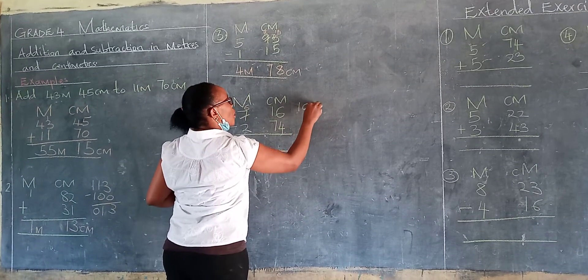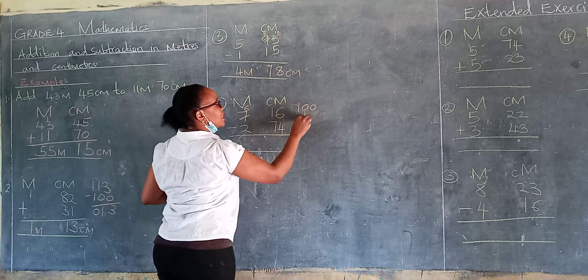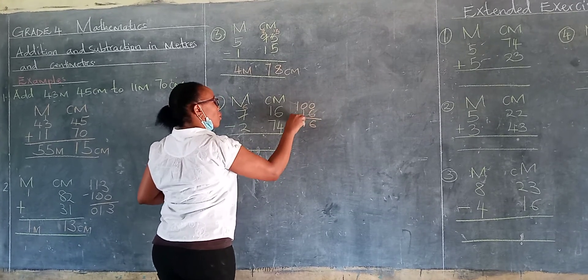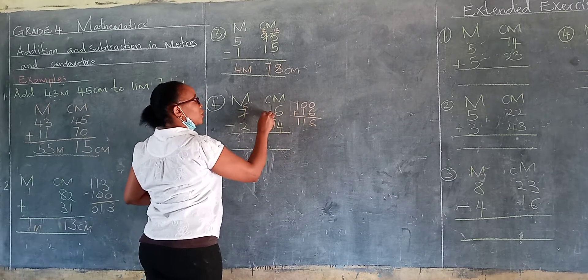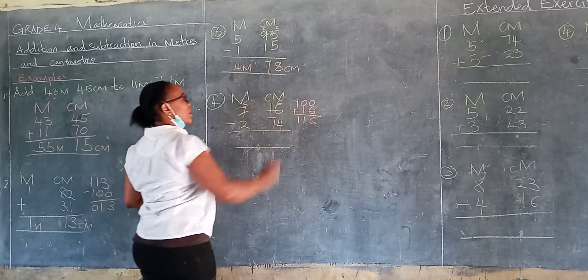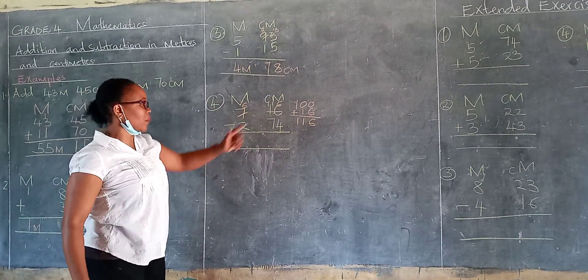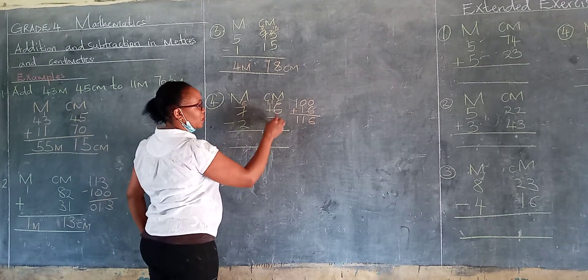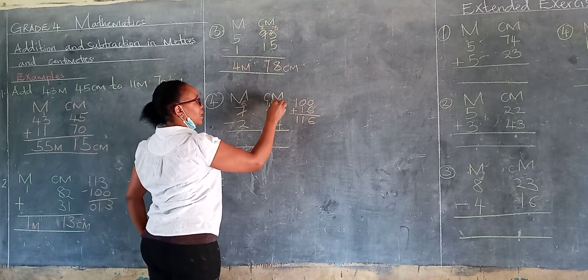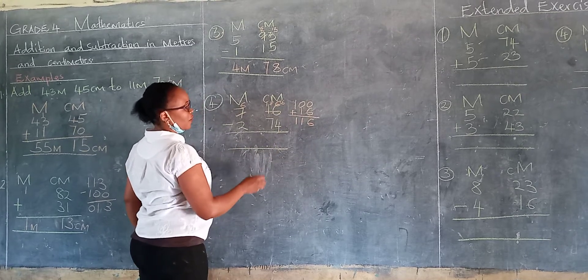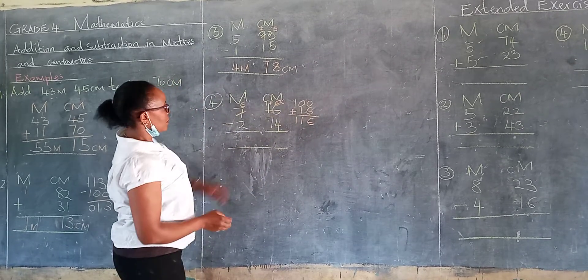So it's like you say 100, now you plus this 16. So we don't have 16 again. We have 116. Now, it is possible. 116 you take away 74 centimeters. You borrow 1. It remains 0. This becomes 16. 16 take away 4.